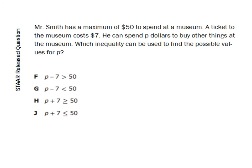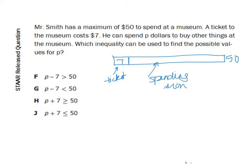Here's a STAAR release question on this. It says Mr. Smith has a maximum, and maximum means that is the most he can spend, of $50 to spend at a museum. A ticket to the museum costs $7. So to get into the museum, he has to spend that $7. He can spend up to P, there's my variable, dollars to buy other things at the museum. Which inequality can be used to find the possible values for P?